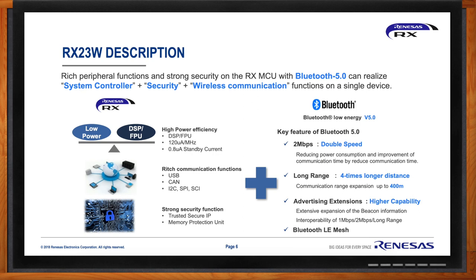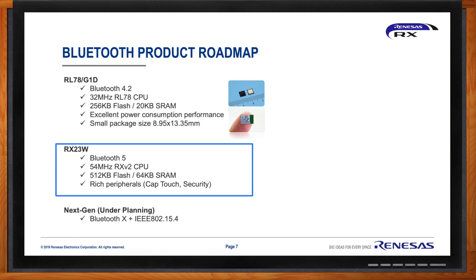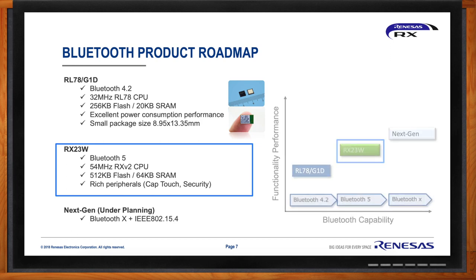How does the RX23W compare with other Renesas MCUs? Our RL78 family, a 16-bit microcontroller family, has a part called the G1D that was Bluetooth 4.2 compliant — a good, nice little chip. But with that 20x increase in throughput performance, jumping to the RX23W results in significantly higher throughput. It also has a faster CPU, more flash, more SRAM, overall more capability, as well as additional peripherals like CapTouch. Security is now added as well — one of the things that comes along with communicating with the cloud is the need for security, and that is implemented on the RX23W. We'll be introducing further devices in the Bluetooth family as we move forward.